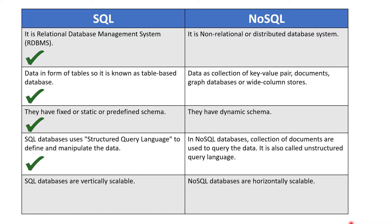The fifth difference is scalability. SQL databases are vertically scalable, while NoSQL databases are horizontally scalable. Scalable here means the ability to adapt to or handle increases in the size or amount of data. Vertical scalability means you can increase the load on a single server by upgrading its RAM or SSD, while horizontal scaling means distributing data by adding more servers.